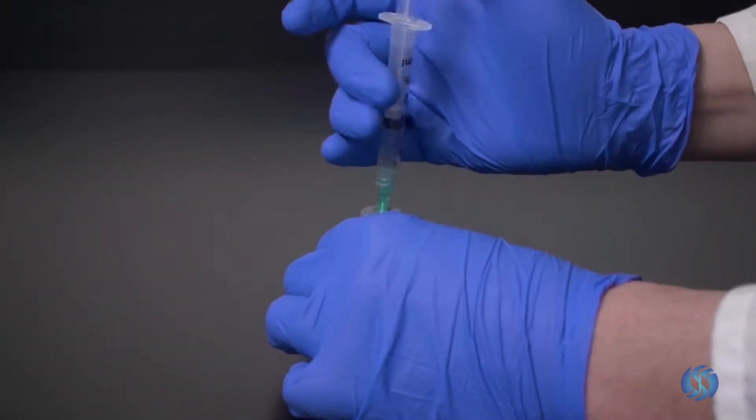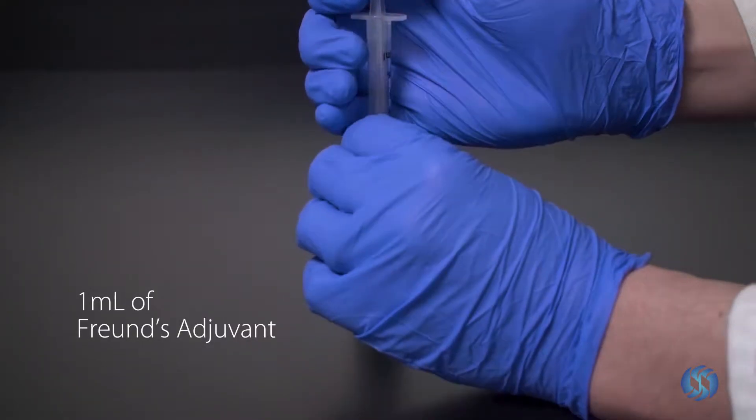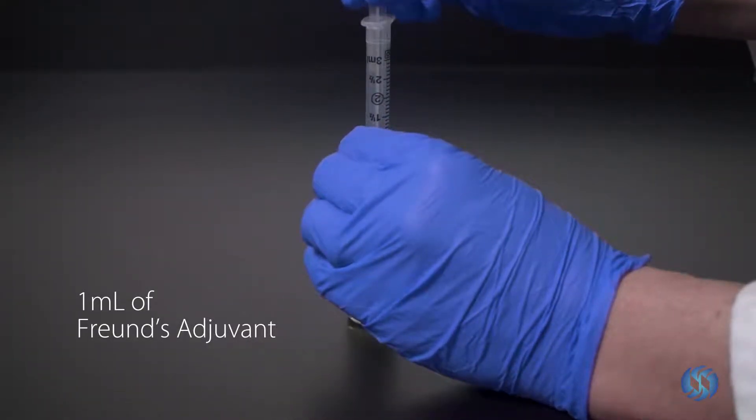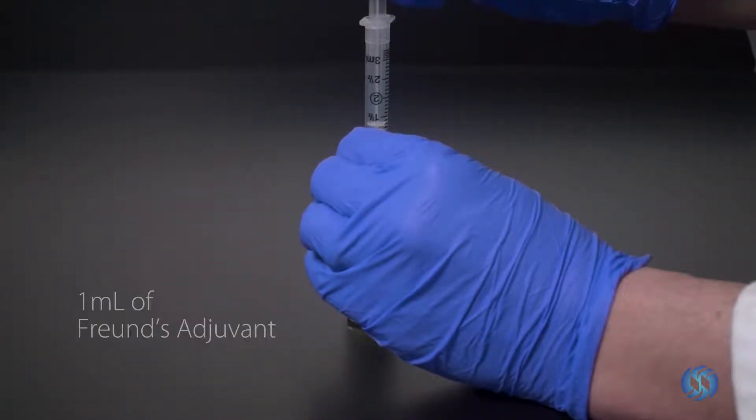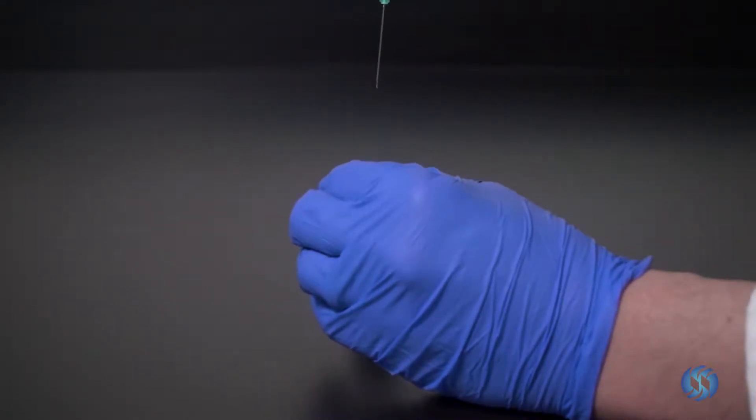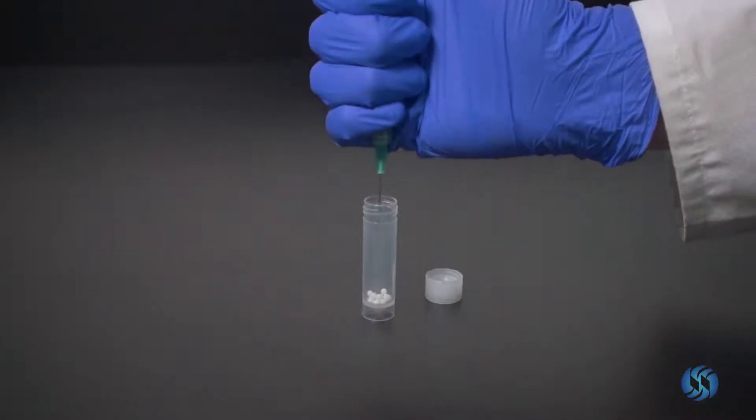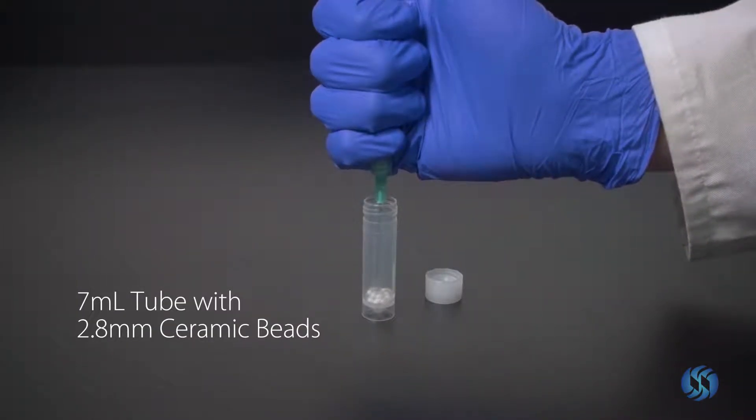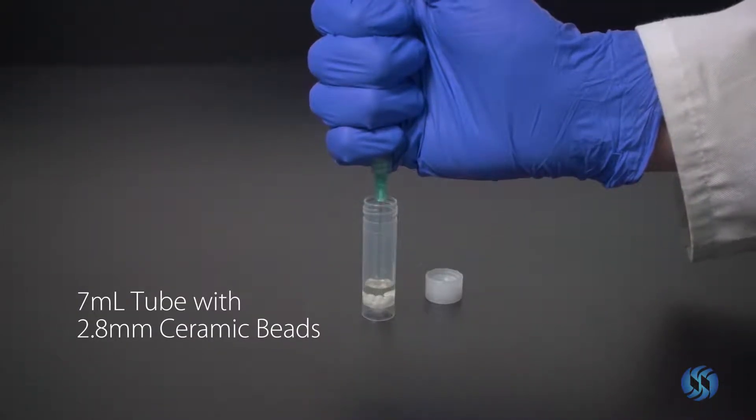To begin, use a syringe to extract one milliliter of Freud's adjuvant. Inject the adjuvant into a 7-milliliter tube prefilled with 2.8-millimeter ceramic beads.